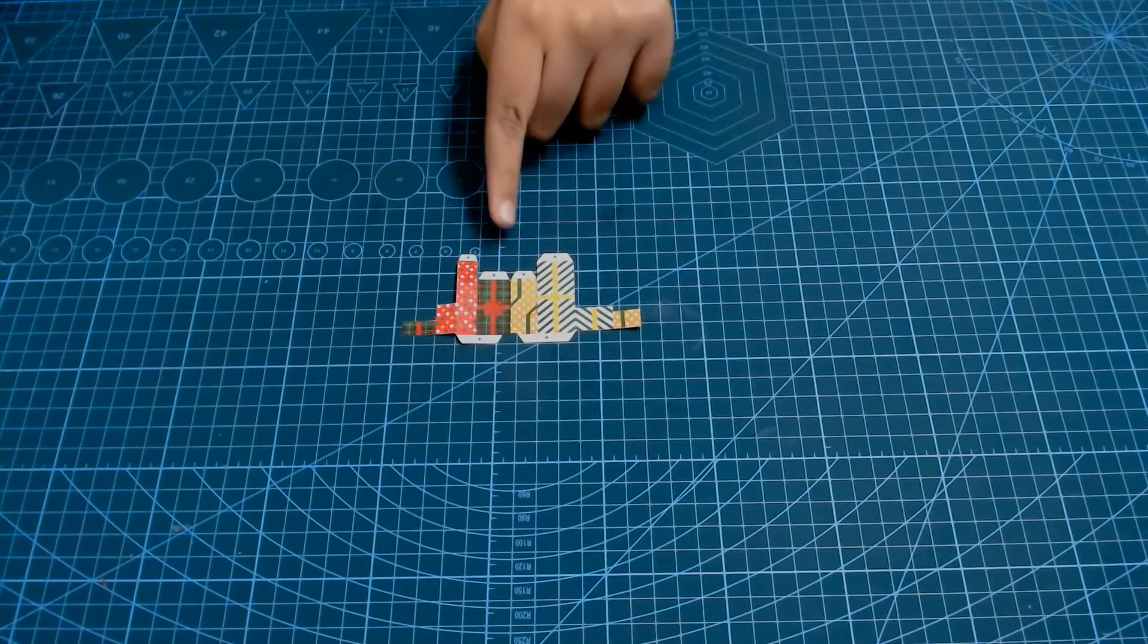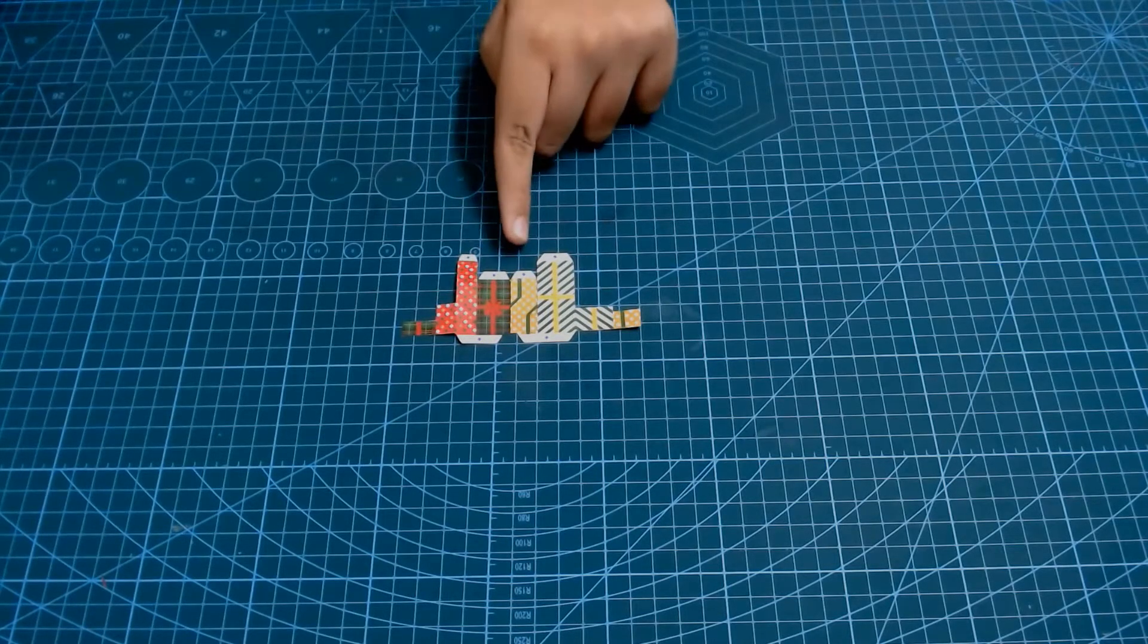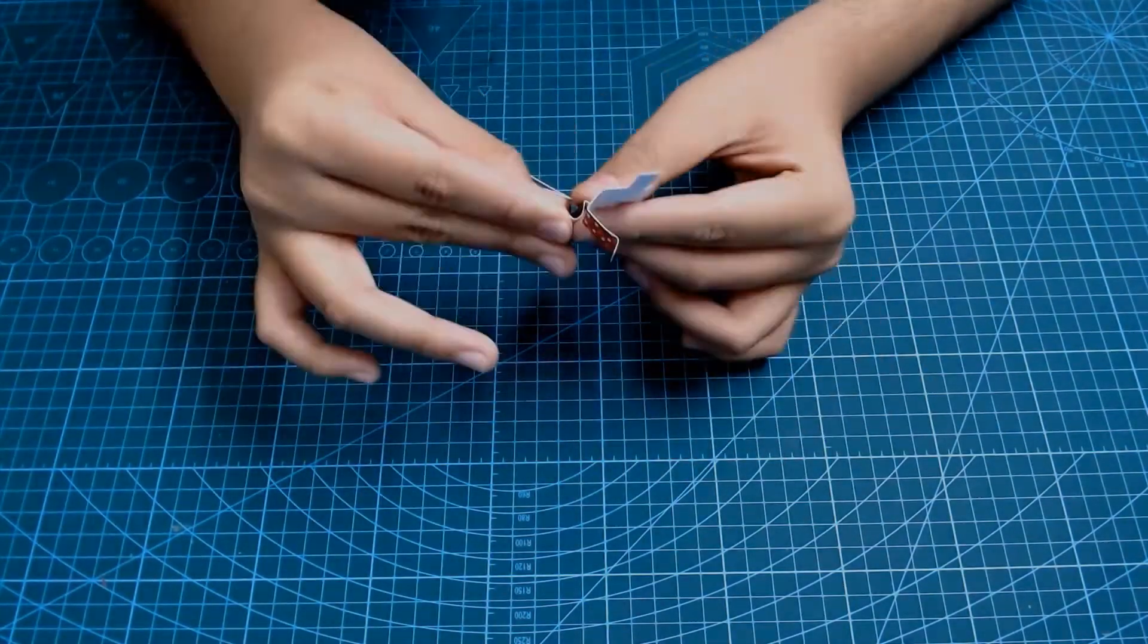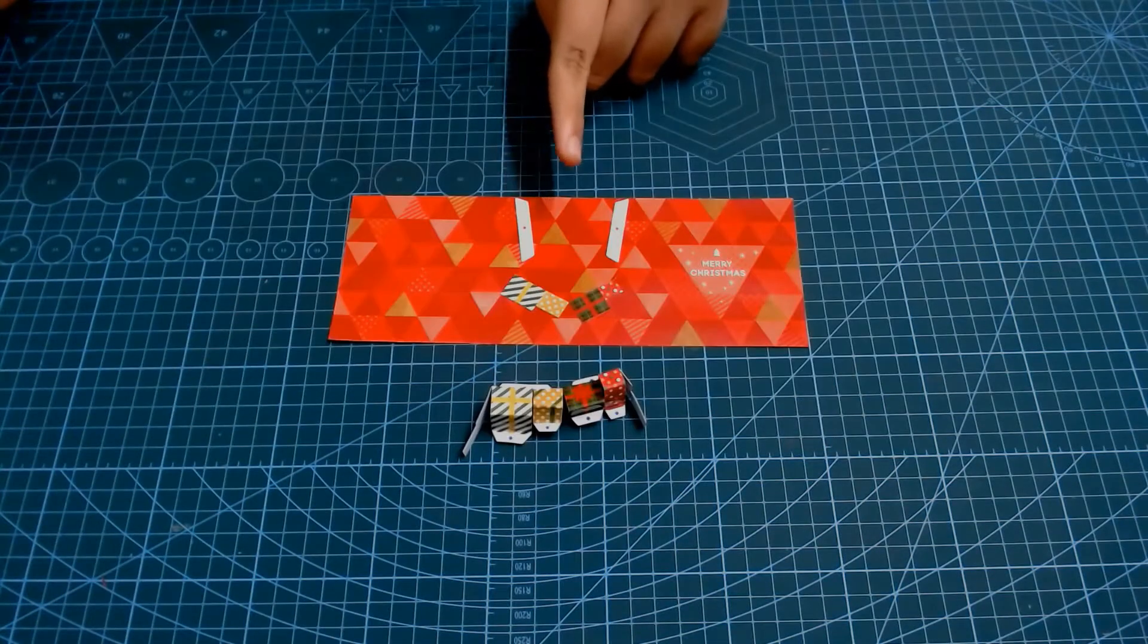Now, the first thing we're going to have to do is fold the gifts. To do this, we're going to start folding on the dashed lines. After you assemble the gifts,